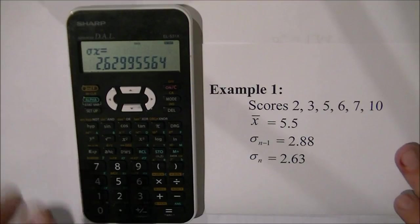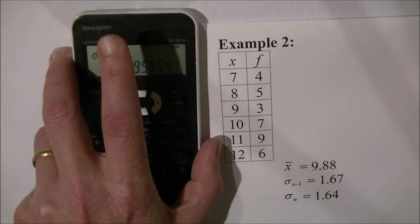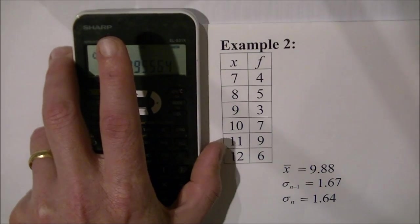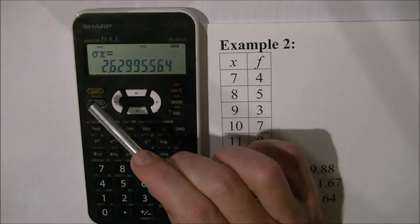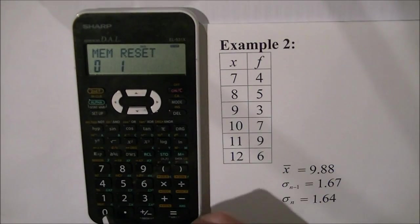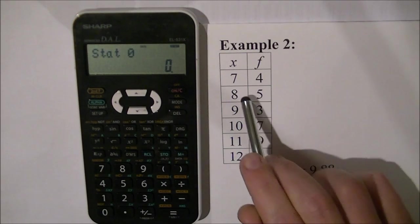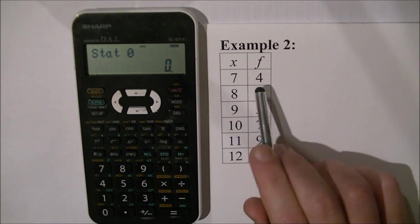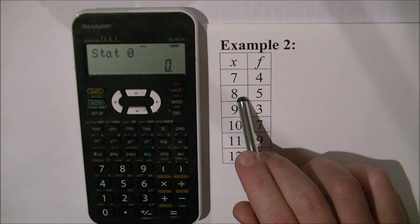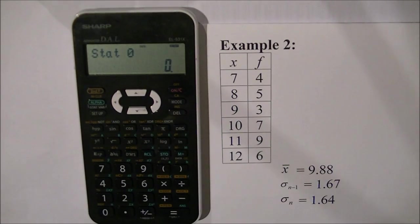Now the next example I'm going to show you is entering information or data from a frequency distribution table. I'll just clear the memory. I press second F alpha 0 0 and my memory's been cleared. When I've got this table, this means that I have the score 7 happening 4 times and the score 8 happening 5 times and so on.